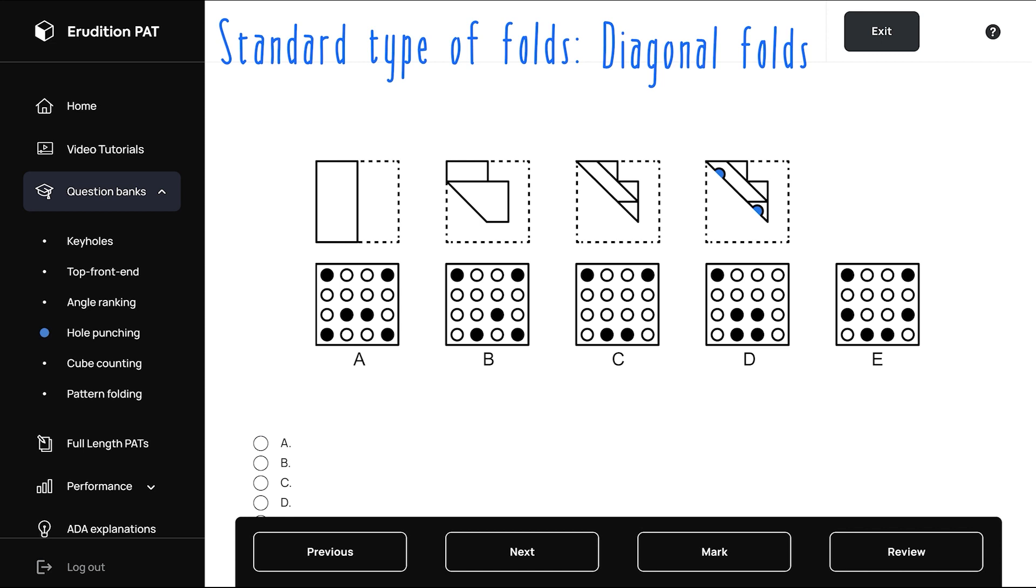So let's unfold this step by step. The first step will simply open up the half holes and not change anything about their position. Notice where they sit here on the hole punching grid.